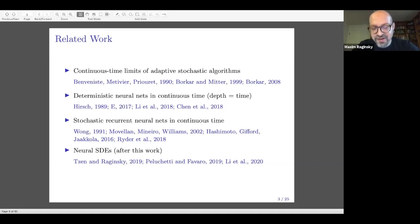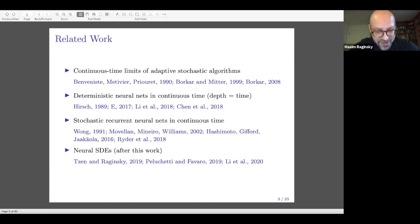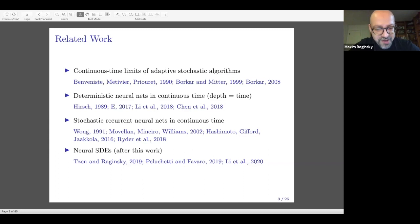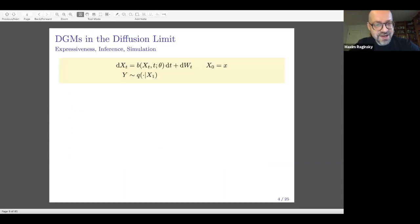One of the earliest papers doing this is by Eugene Wong in 1991, who took something like a Hopfield net and implemented it in continuous time as a diffusion process, analyzing its convergence and identifying conditions like the spectral gap. Since then, the idea has been picked up in neuroscience, machine learning, and mathematical finance. Our motivation was to ask: how rich and expressive are these models? Neural SDEs are now a developed area with efficient backprop procedures using SDE solvers.